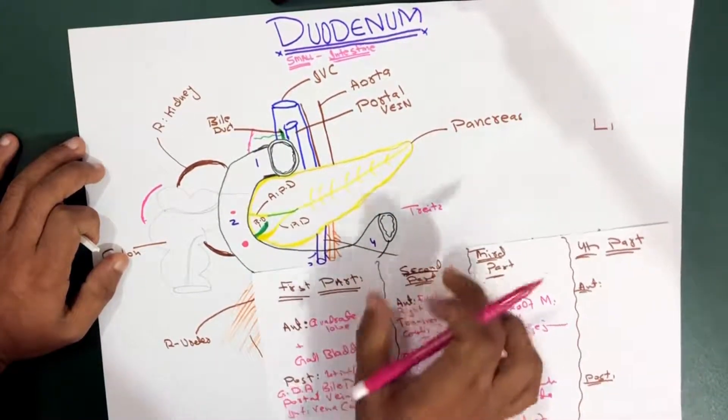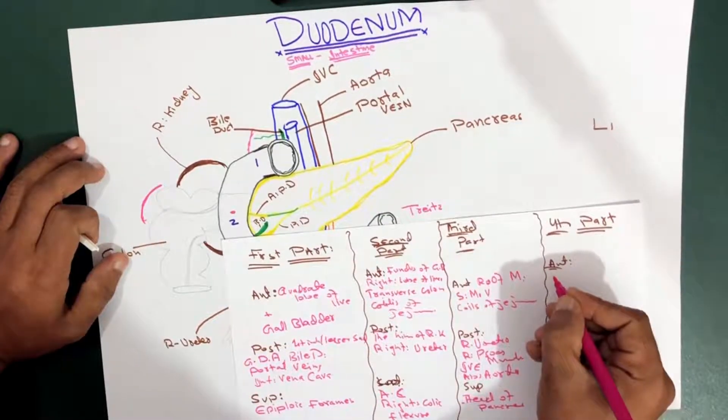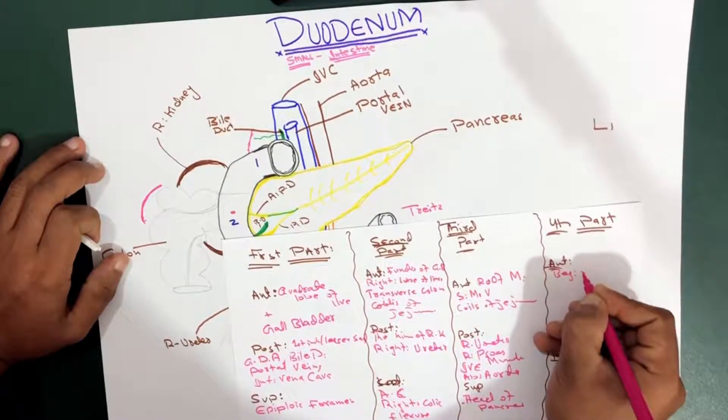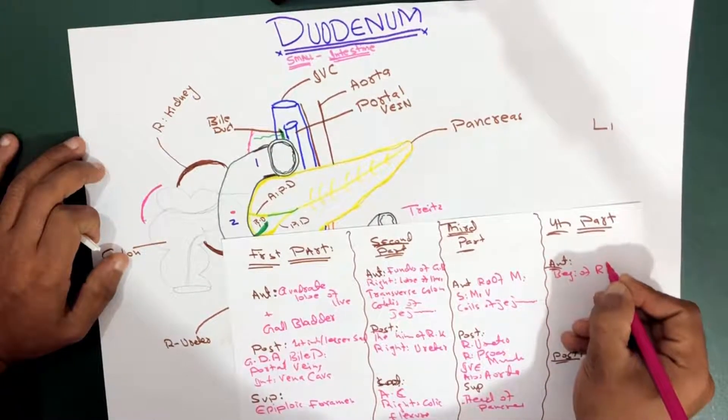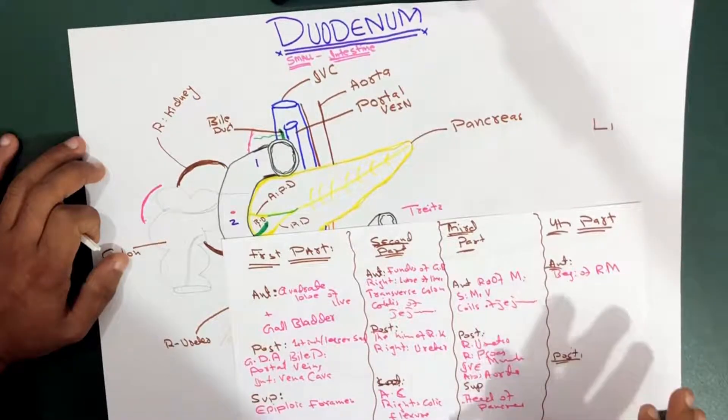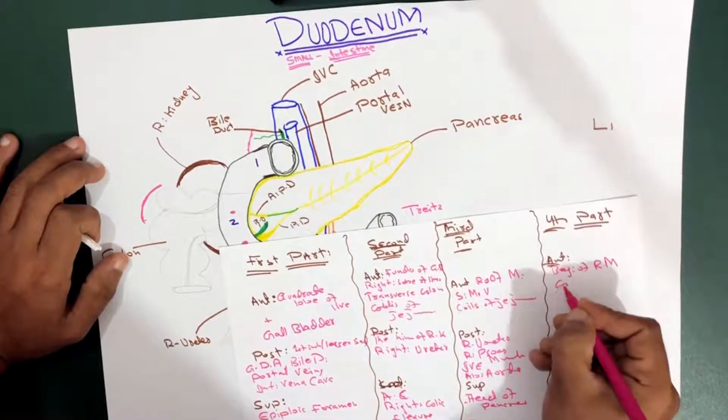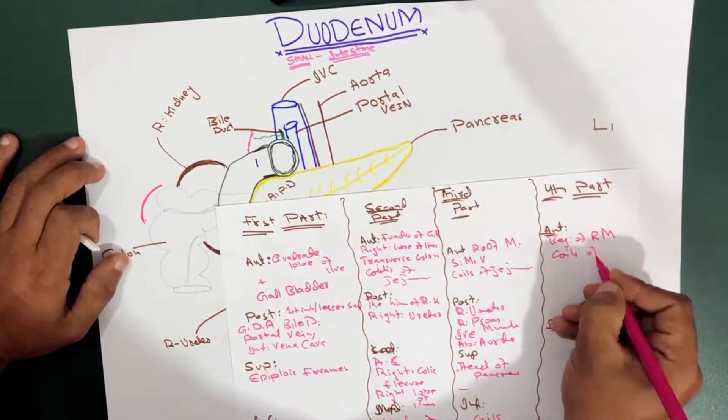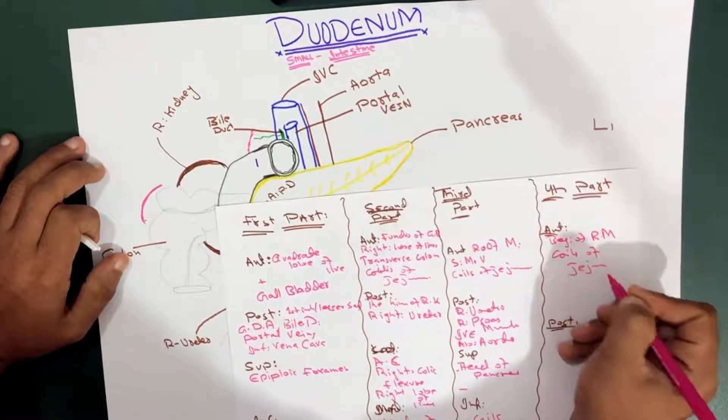So we're going to say the beginning of the root of mesentery and coils of jejunum. There are coils of jejunum surrounding anterior to it.